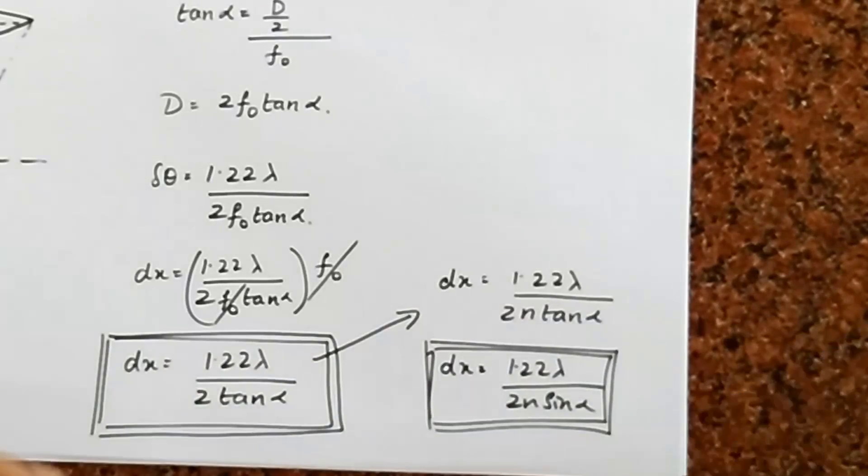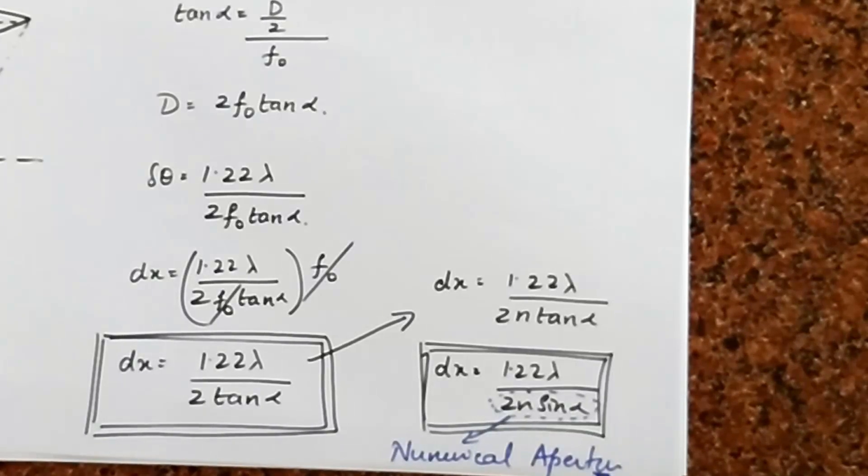And this number over here, what you see over here, is what you call now as the numerical aperture - numerical aperture of this particular microscope.